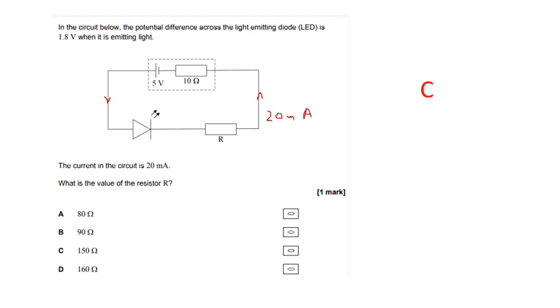So if I know the voltage across the resistor, I can work out its resistance. Well, we're told that we've got 1.8 volts across the diode. Now, we're going to have 0.2 volts across the internal resistance. Why? Because I did V equals IR. So that means we must have 3 volts across there. So we know V, we know I, so we know R. The answer is C.